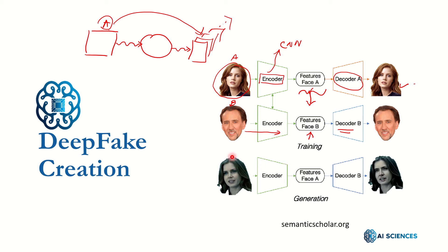Now think about this: if we use the same encoder but give person A to it, and then use the decoder of B — so we use the encoder of A (which is the same as B's encoder), meaning the feature map represents the description of person A, but then we force the decoder of B to reconstruct person B — that generation step actually creates the fake image. We have mapped the face of B onto the face of A, and it looks like the original face of B.